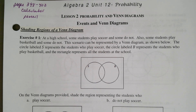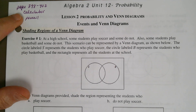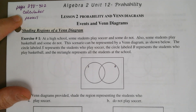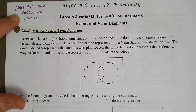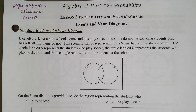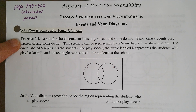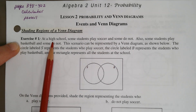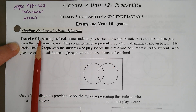Today we're on lesson two of unit 12, probability and Venn diagrams. It'd be helpful if you had a calculator and a pencil. We have quite a few pages to cover starting on page 398. We'll be first looking at shading Venn diagrams.